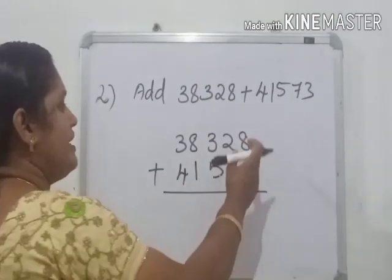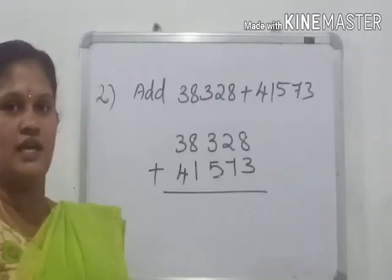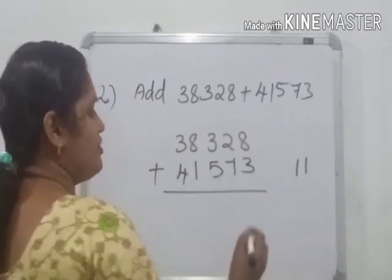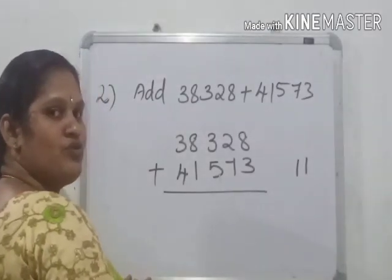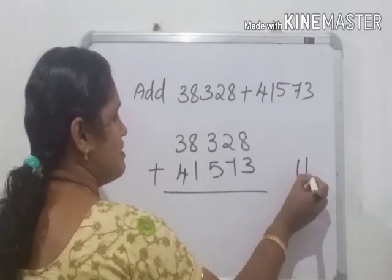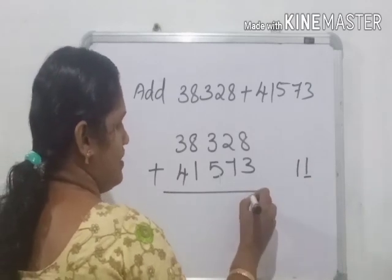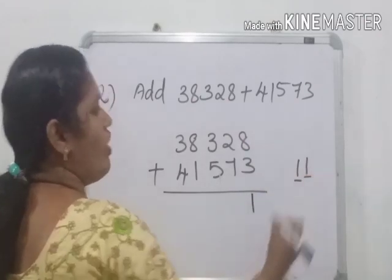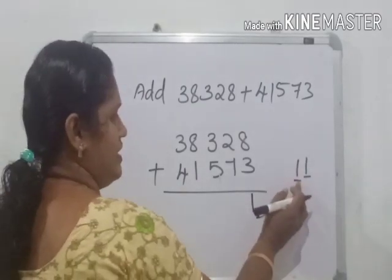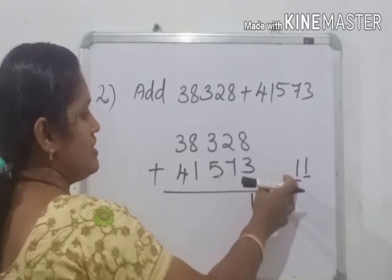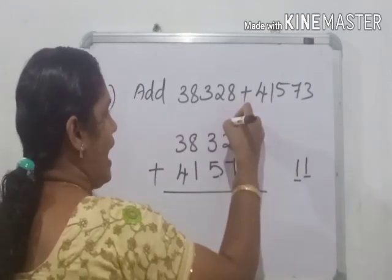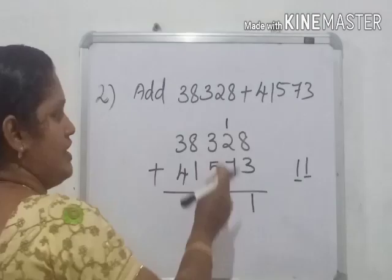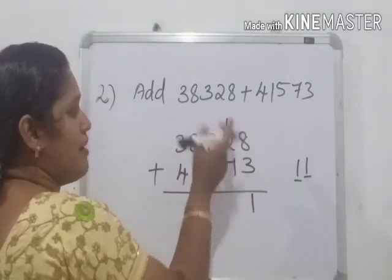Here, when we add units place digits, 8 plus 3, we will get 11. 11 is a two-digit number, but we need to write here only one digit. What we will do? So we write the units place digit here, down units place. Then, one is in tens place here. So we write this tens place digit as carryover and write just above tens place. Clear? Here, one is carryover. Write just above tens place.